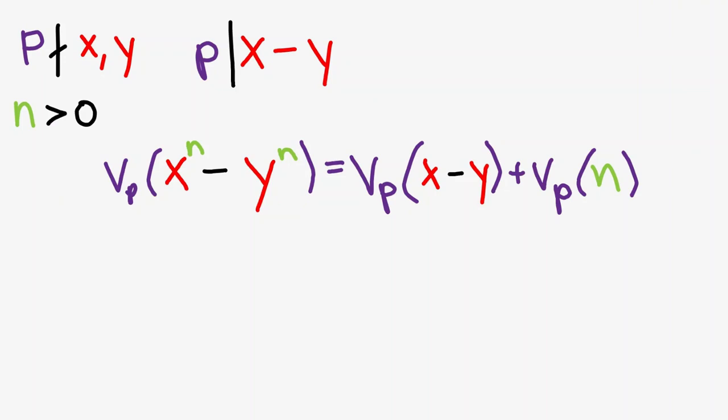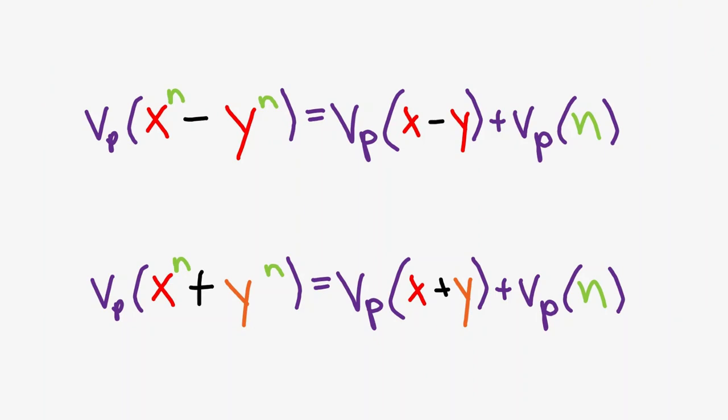A similar equation can be found if we replace y with negative y, which in this case x plus y must be divisible by p and n is odd. There are also some other variants, which will not really be covered in this video. For the time being, take a second to understand these equations.